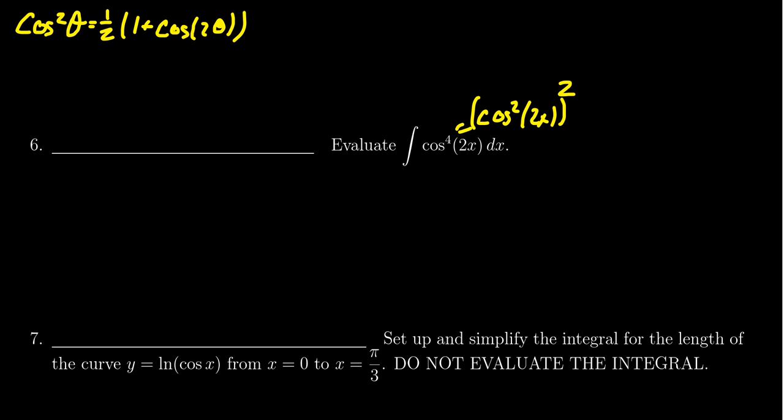And so when we apply the half angle identity, we're going to have to square everything in there. So we get the 1 half, 1 plus cosine of 4x squared.